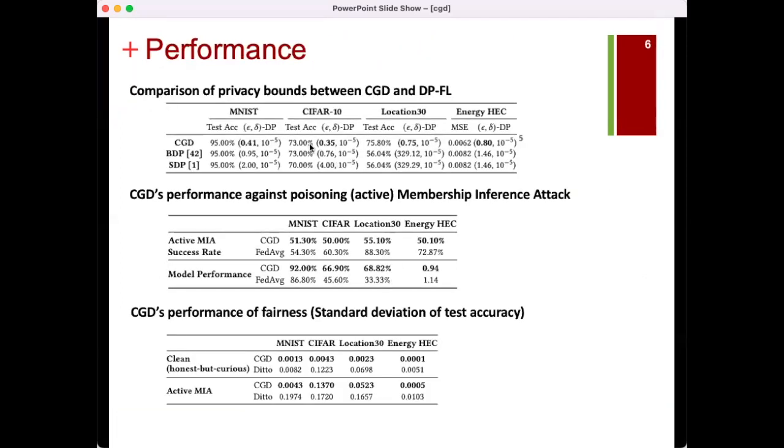Regarding the experimental results, CGD maintains a lower epsilon compared to state-of-the-art approaches, effectively defending against membership inference attacks by reducing attack accuracy to 50%. And in terms of fairness, CGD surpasses fairness baselines by decreasing the standard deviation of test accuracy across participants in all settings.